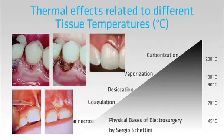Let's begin at the lower temperatures. We don't want to see a lot of coagulation during surgery. You can see white areas on the lower left clinical slide during the laser frenectomy.